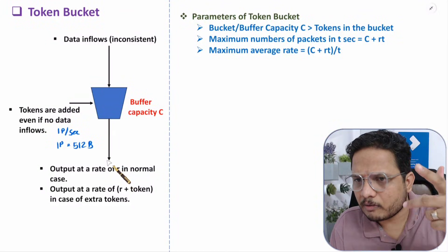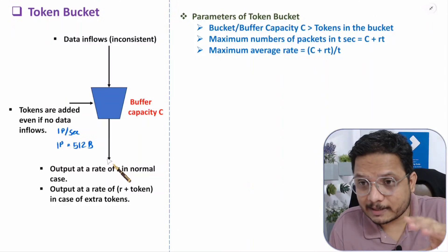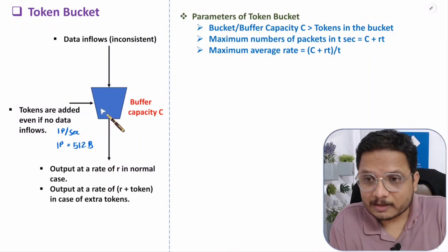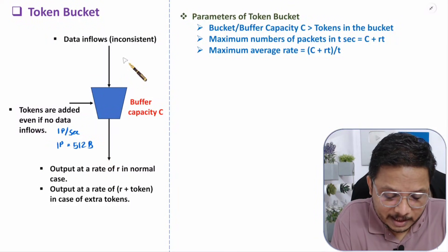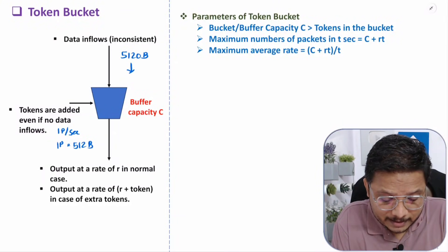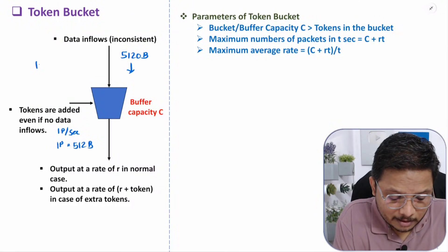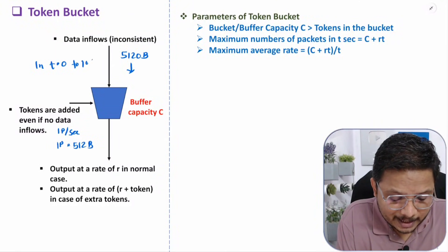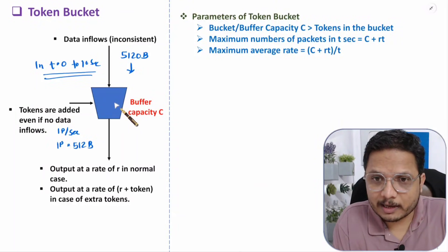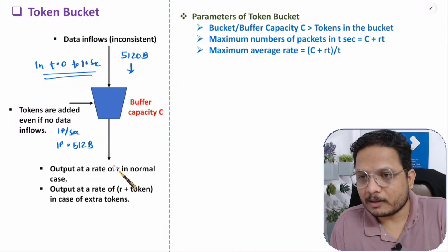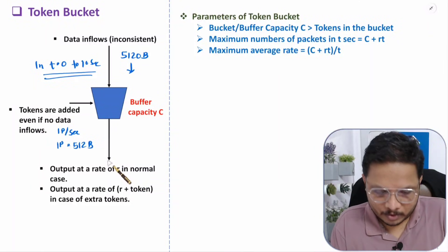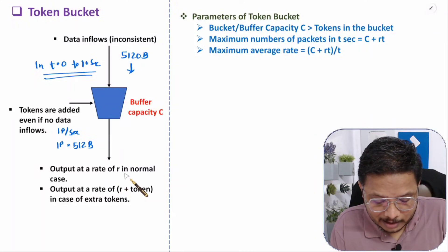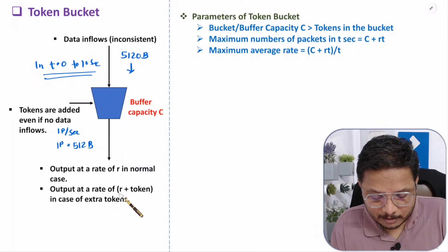For 10 seconds there will be 10 packets having tokens, each of size 512 bytes. So if 5120 bytes arrive immediately, those 10 packets — which accumulated tokens during t = 0 to 10 seconds — will go out immediately. The normal data rate r is always present at the output side, as per leaky bucket. So output will be at rate r in the normal case, but output will be at rate r plus token rate when extra tokens are available.